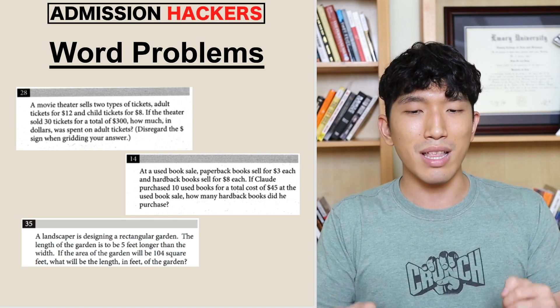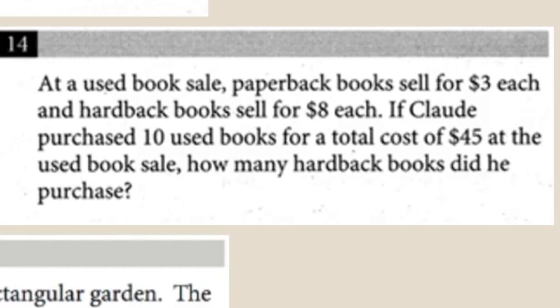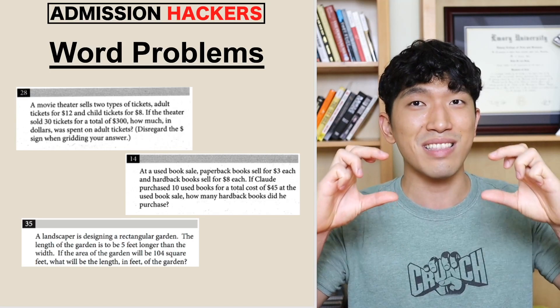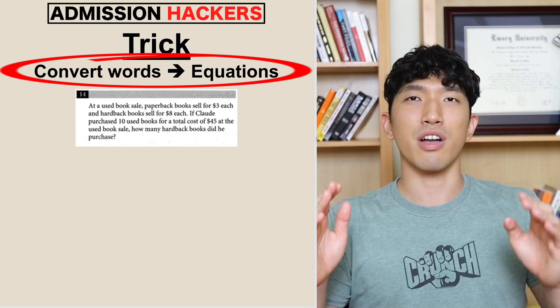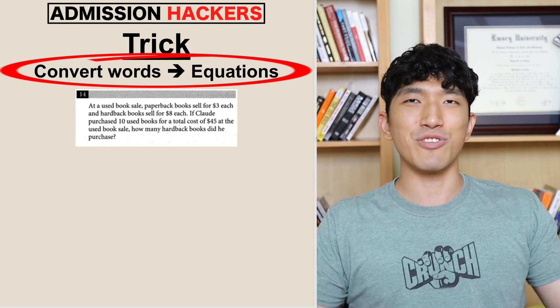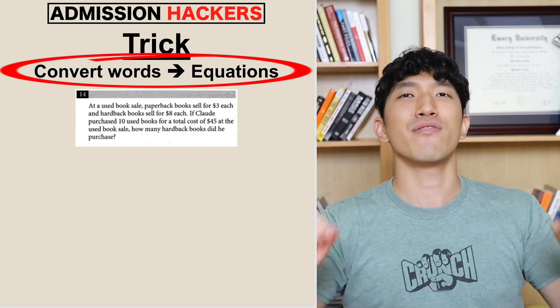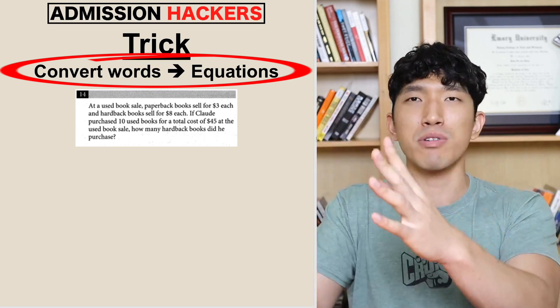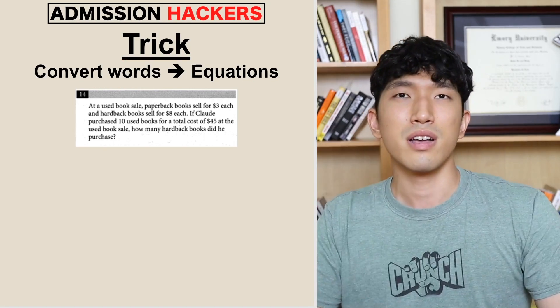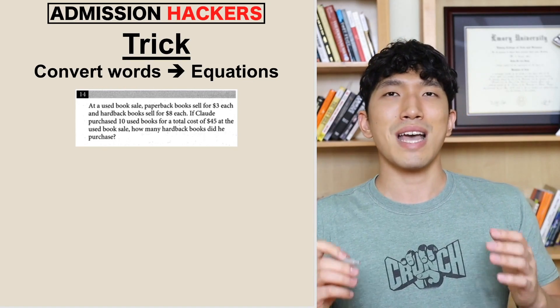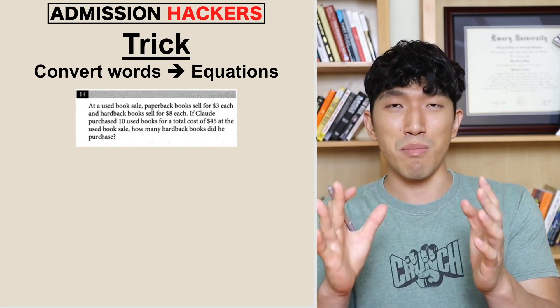So how can we recognize that we are dealing with a word problem? It's actually really simple. Look at the question and if it has a lot of words in it — if it's like a wall of text — there's a very high chance it's going to be a word problem. And to solve all these word problems, all you have to do is just convert words into numbers. That's it. If you can convert words into numbers, you are going to be the king of word problems. Nothing's going to be impossible.